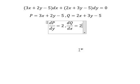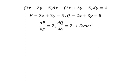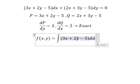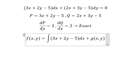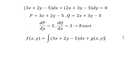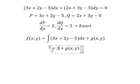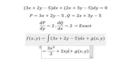We see that both values are the same — number one and number one — so this equation is exact. Now we need to set up the function f(x,y). We integrate this expression, which includes x squared over two, then two xy, then negative five x.